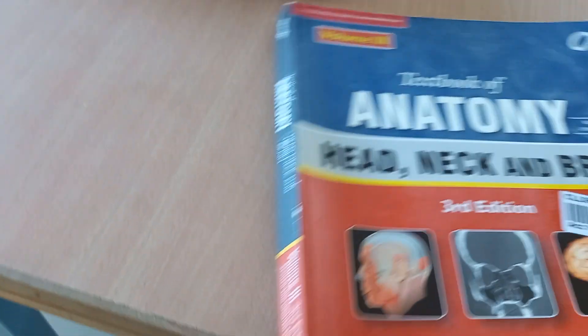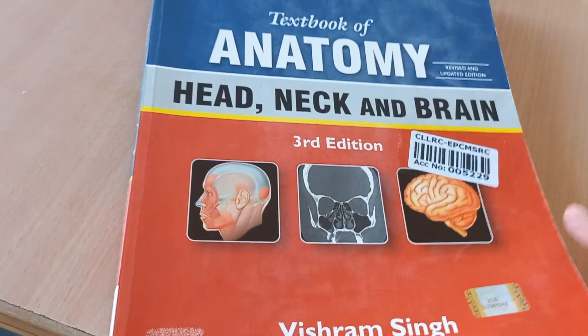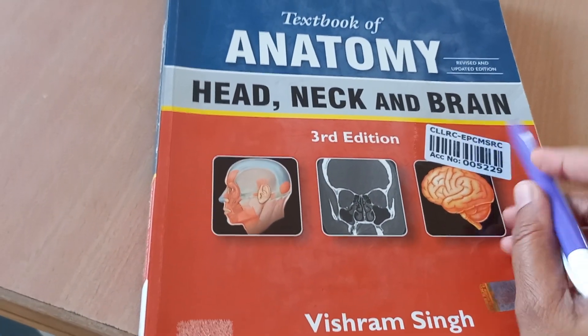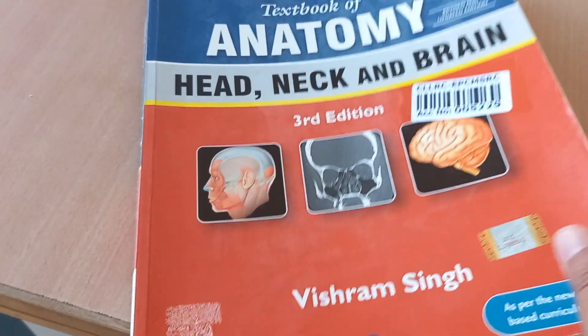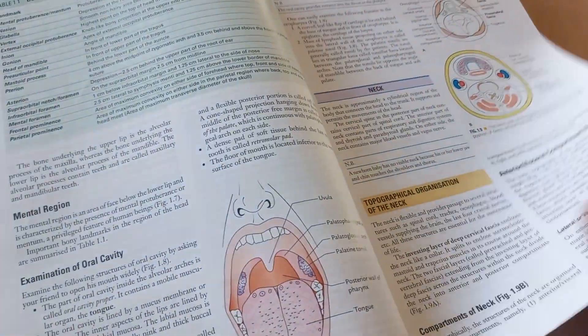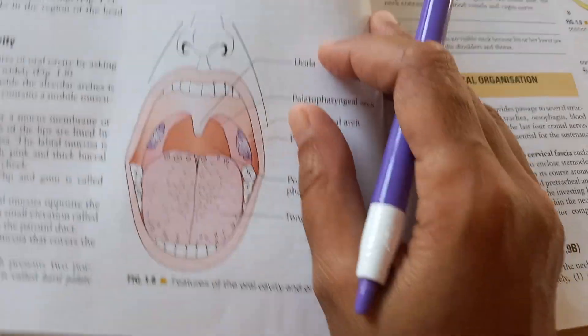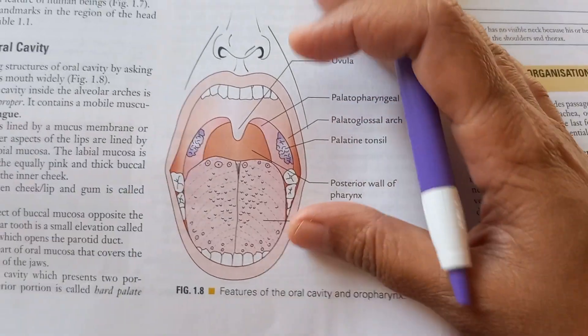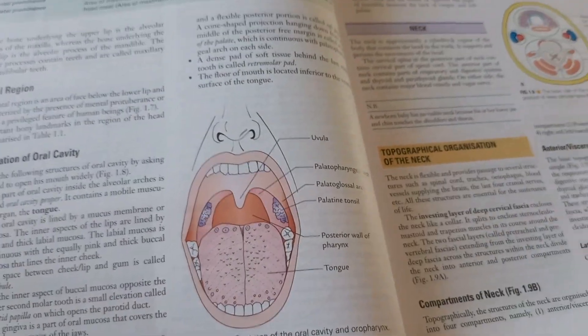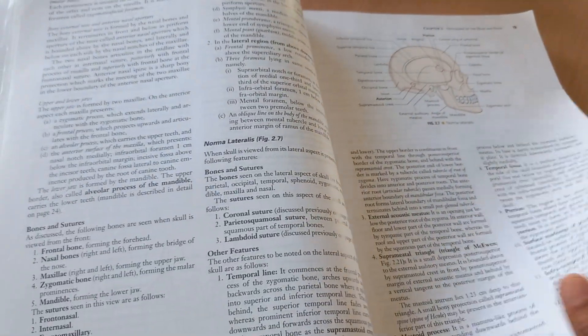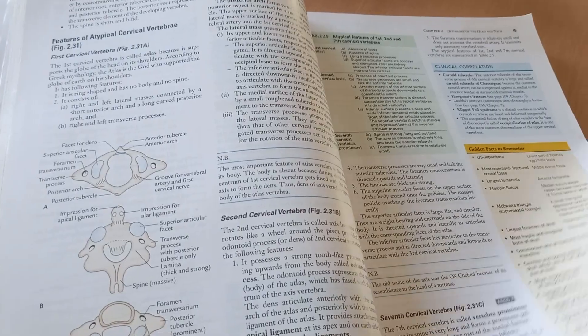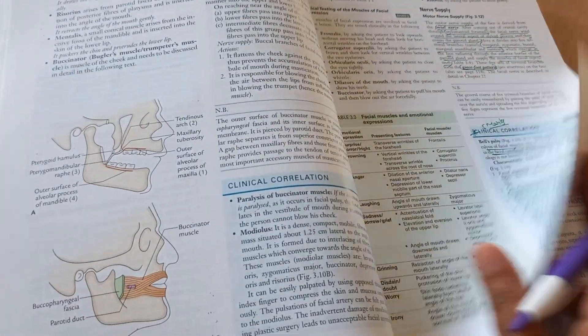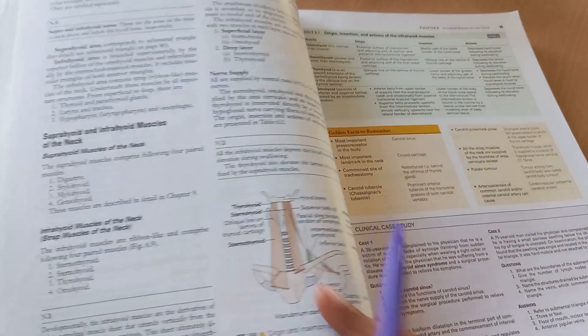So now last book we will look at. That is the head, neck and brain. So head, neck and brain. Brain I think is something like neuroanatomy. So let us look at this. They are covering all the three in the same book. So head means they are covering all your ENT part also. So the skull, the bones, all those foramina you should know. All the cranial nerves you should know.